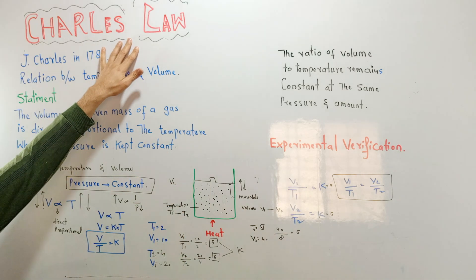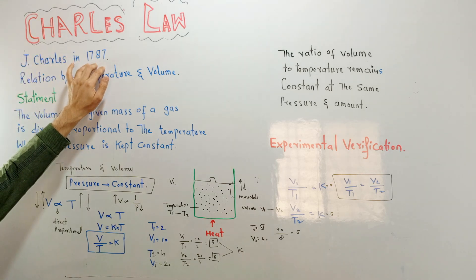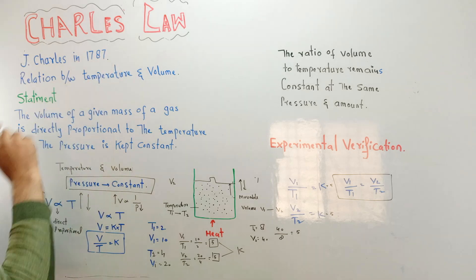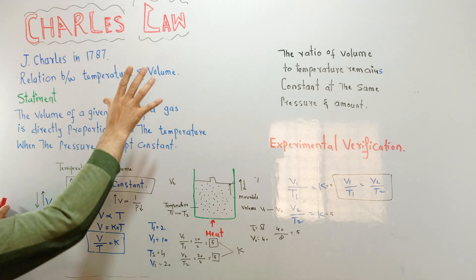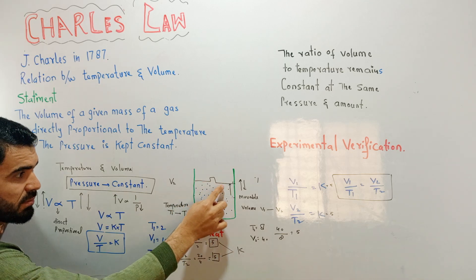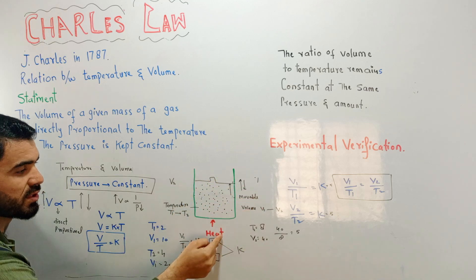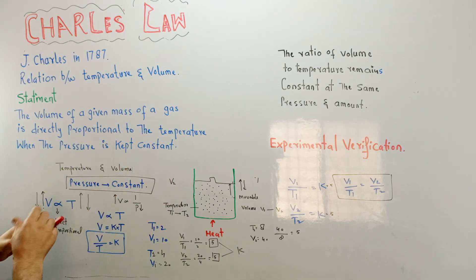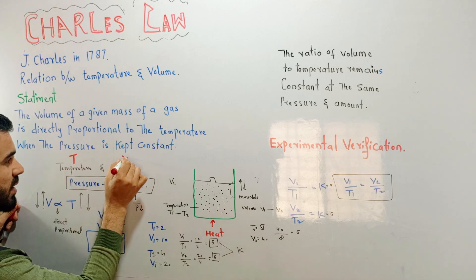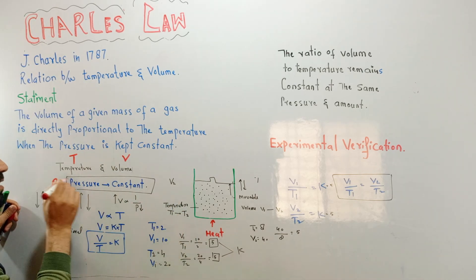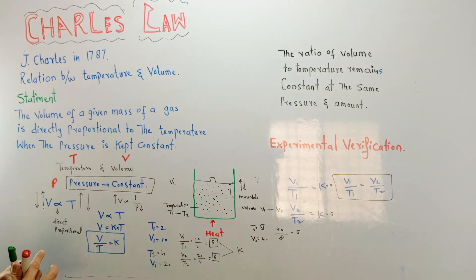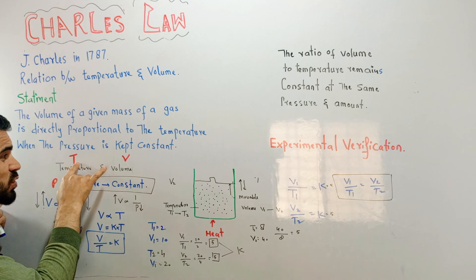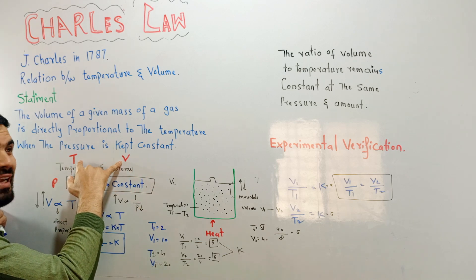Charles's Law — the law was discovered in 1787. According to this law, the volume of a given amount of gas is directly proportional to its temperature. The relation is between temperature T and volume V, while pressure P is kept constant. Just like in Boyle's Law where two parameters were related and the third was constant, here the two parameters are volume and temperature, not volume and pressure.